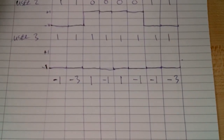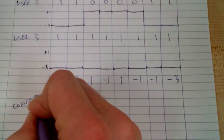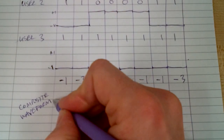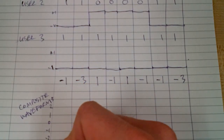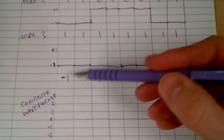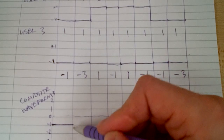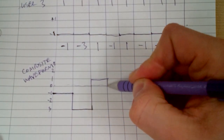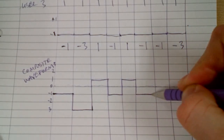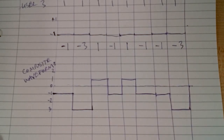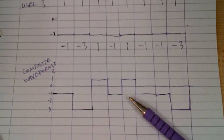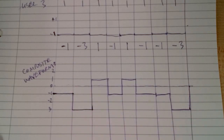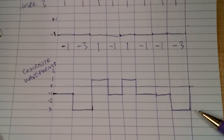So if we wanted to create a composite waveform — this would be the waveform that every single user receives — we have values going from minus three up to one. The waveform goes: minus one, minus three, one, minus one, one, minus one, minus one, minus three. Every receiver is going to receive this composite signal.